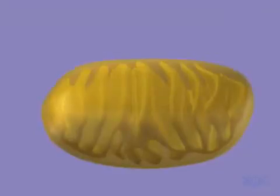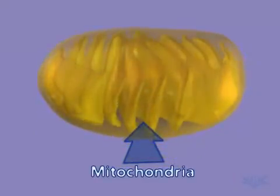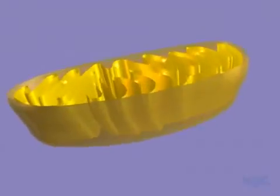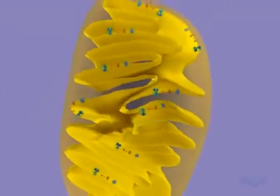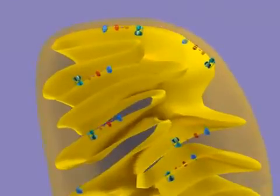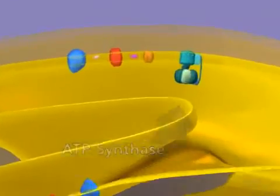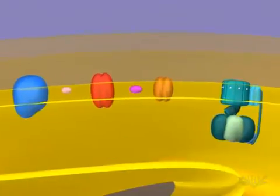Gradients and the potential energy they create are key aspects of the biological world. A good example of the use of a gradient occurs in the mitochondria when ATP is synthesized. ATP is synthesized by ATP synthase, a large complex of membrane-bound protein. Here we see ATP synthase, along with other membrane-bound proteins.